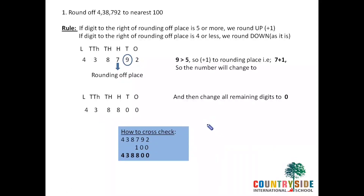Now let's cross-check. I have written the question and the rounding off digit in the 100s place is 7. I have added 1 there and it turns to be 8. Why did I add 1? Because the digit to the right of the rounding off place — that is 9 — is greater than 5. Clear with it?